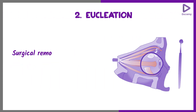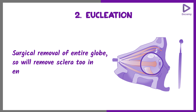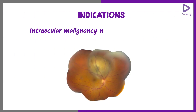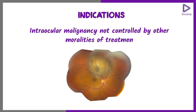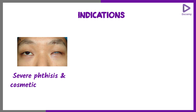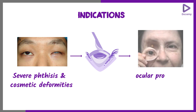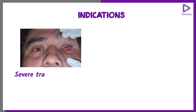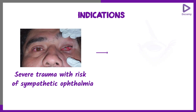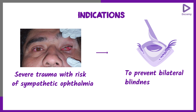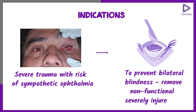Enucleation is the surgical removal of the entire globe — you remove the sclera in enucleation. Indications include intraocular malignancy not controlled by other modalities of treatment, severe phthisis or cosmetic deformity where it is better to remove the shrunken atrophic globe and fit a better-looking ocular prosthesis, and severe trauma with risk of sympathetic ophthalmia in the other eye, to prevent bilateral blindness.